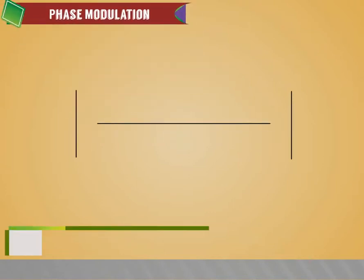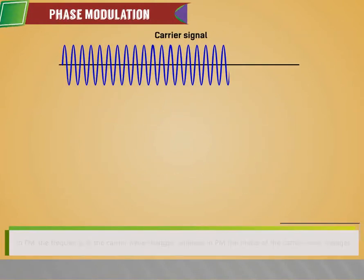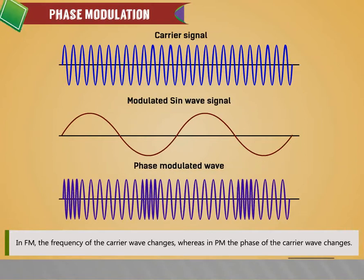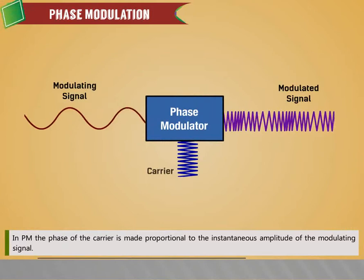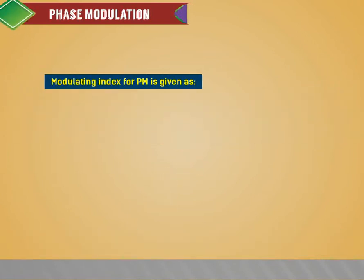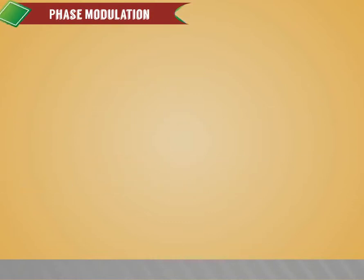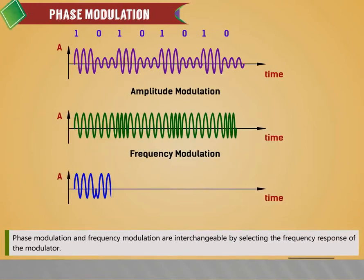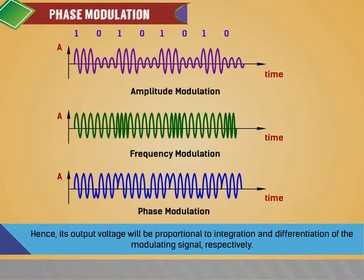Phase Modulation (PM) is similar to frequency modulation. In FM, the frequency of the carrier wave changes, whereas in PM, the phase of the carrier wave changes. In PM, the phase of the carrier is made proportional to the instantaneous amplitude of the modulating signal. The modulating index for PM is β = Δφ, where Δφ is the peak phase deviation in radians. Phase modulation and frequency modulation are interchangeable by selecting the frequency response of the modulator; its output voltage will be proportional to integration and differentiation of the modulating signal respectively.